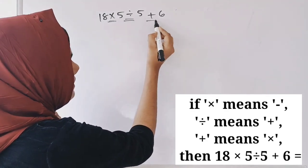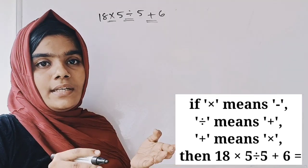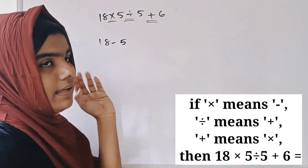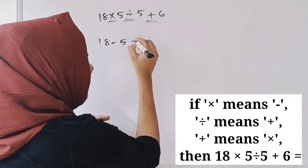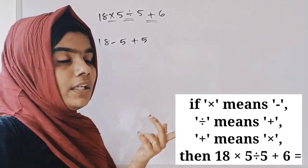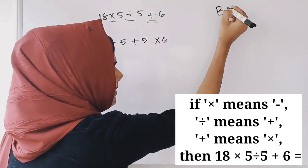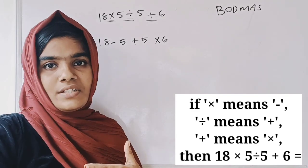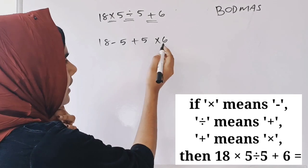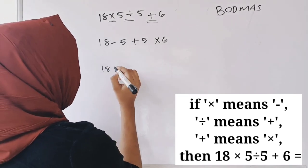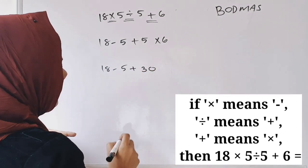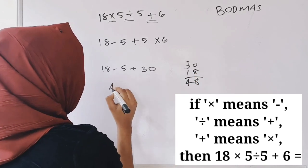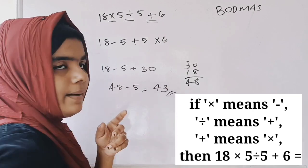After substitution: 'into' becomes minus, 'divided by' becomes plus, giving us 18 minus 5 plus 30. First, 5 into 6 is 30. Then 18 plus 30 is 48, and 48 minus 5 is equal to 43.